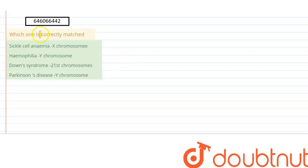which one is correctly matched. So we have four options in which some of the diseases or disorders are given with their associated causes. We need to tell which one is a correct match. Alright, so let's start.